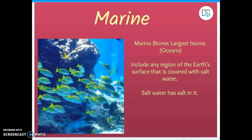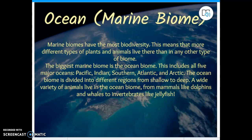We're going to start off with the marine biome. The marine biome is the largest biome — it is the oceans. How do I know it's the largest? It covers roughly 75% of the earth. Obviously it has to be the largest of all the biomes. It includes any region of the earth's surface covered with salt water. That brings us to another definition: what is salt water? A really easy definition — water that has salt in it. We're going to jot those two things down — marine biome and salt water — on our anchor chart.